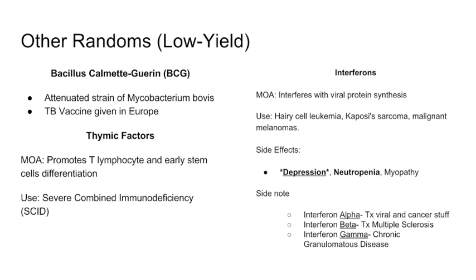BCG is an attenuated strain of Mycobacterium used as a tuberculosis vaccine in Europe. Patients who received this vaccine will test positive on TB skin tests and require chest X-rays instead.